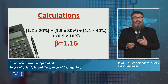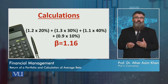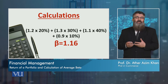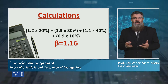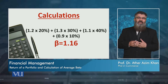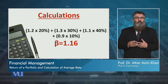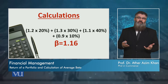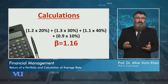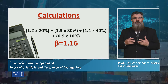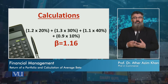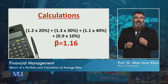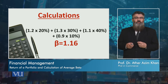So the stock with a beta of 1.2 has 20% of our total investment, and the stock with a beta of 1.3 has 30% of our investment, and so on. When we solve this weighted average equation, we arrive at the portfolio's average beta.